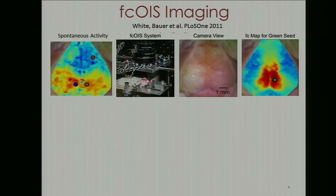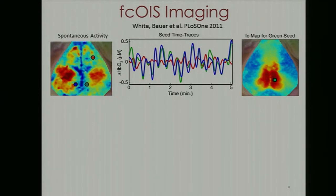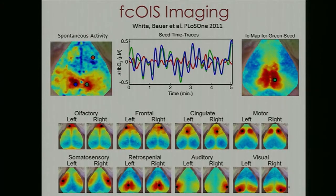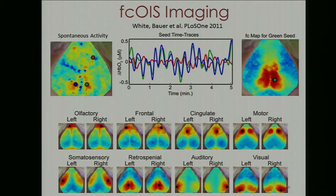You can analyze it by measuring the correlation between different positions. For instance, the blue spot and the green spot are highly correlated, whereas the red spot is not as correlated to the blue and green. You can then make a map of the R values between the green seed and every other pixel in the mouse brain. Moving these seeds around the field of view, we can map out all the different functional regions, and from that, deduce the functional architecture and connections between these functional regions.